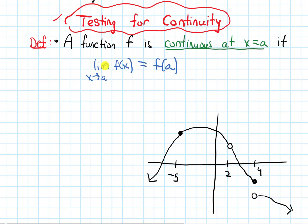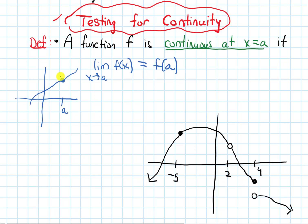Conceptually, what this is saying — when we say that these two things are the same — is: if I draw a rough graph and mark a, the limit as x approaches a, from the left and from the right, that limit needs to be equal to the value of the function at a, equal to the y value. So that limit has to meet where the actual point is at x equals a.